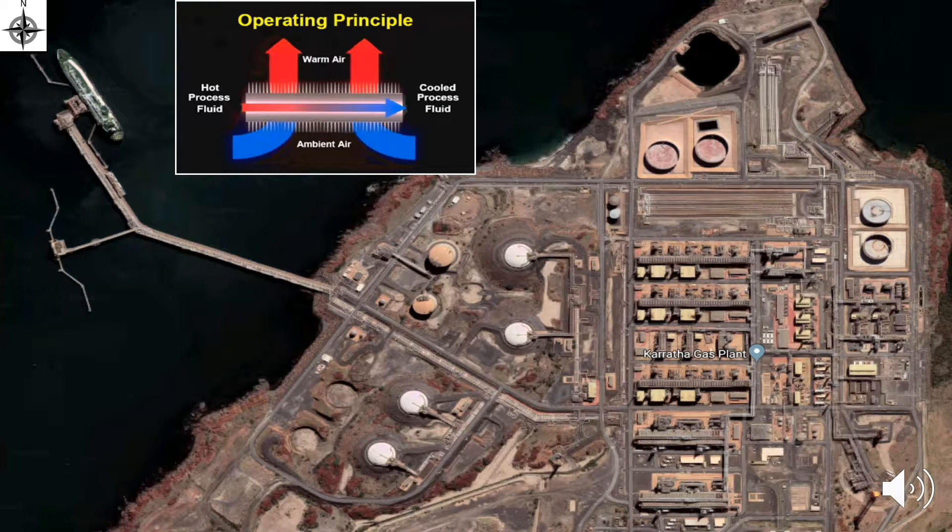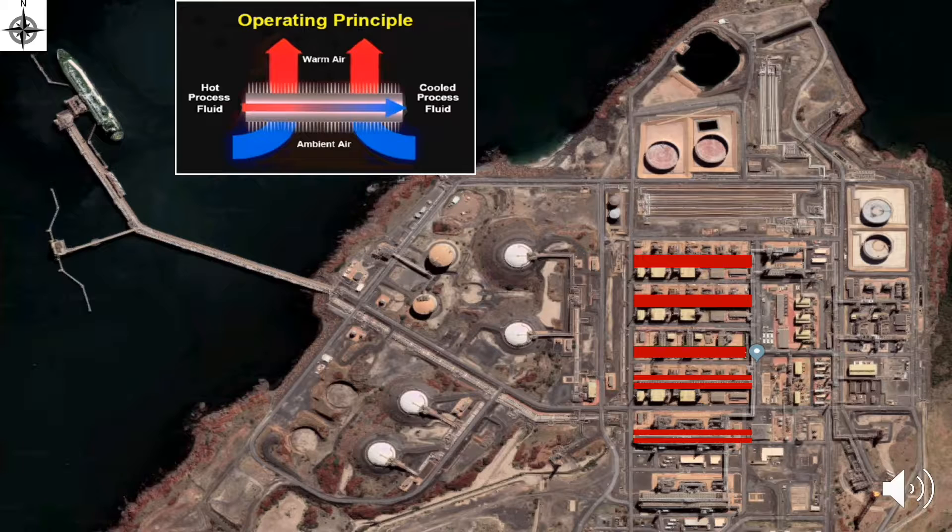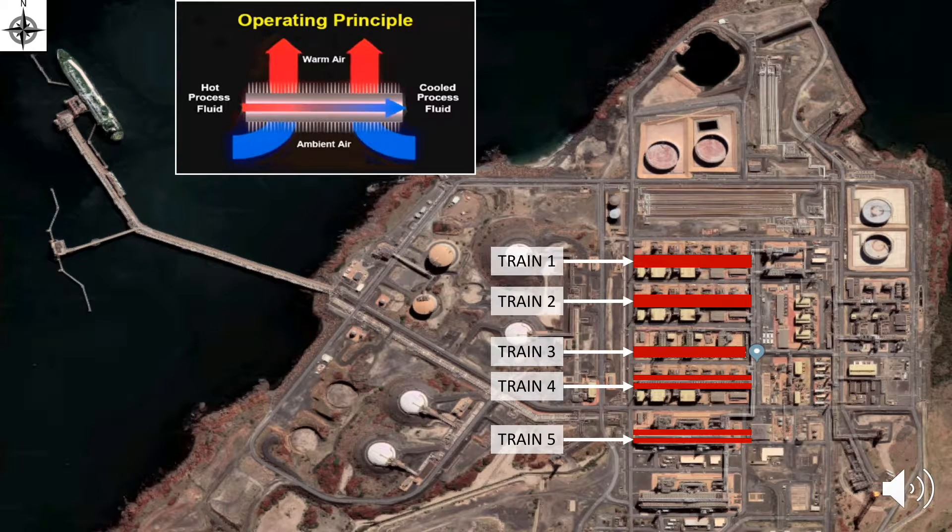However, one of the most significant heat exchangers are the air-cooled heat exchangers commonly known as FinFans. There are five process trains at Karratha gas plant and the air-cooled heat exchangers are installed on top of each of these trains.